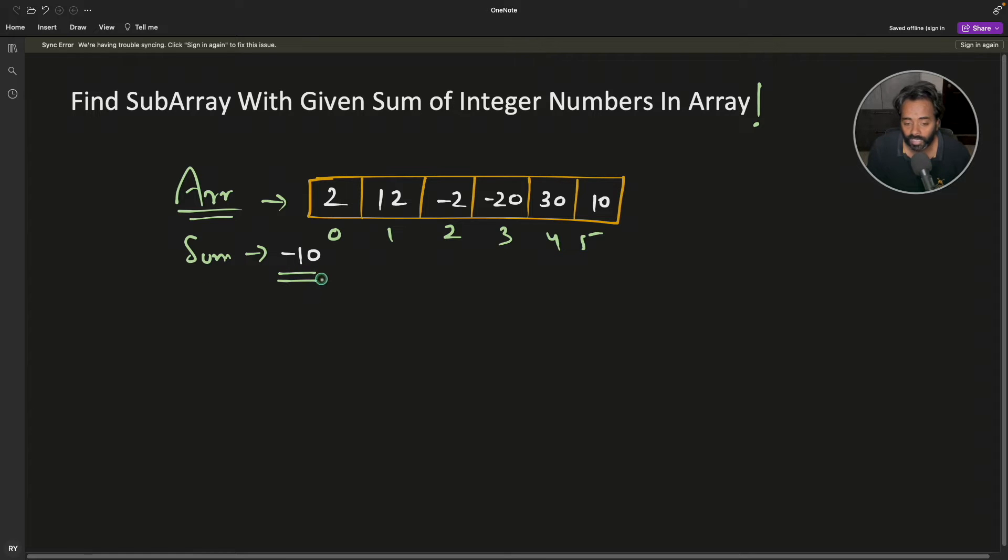So sum is -10, so the answer is this guy from here to here. You have to return 1 and 3. This is the problem because if you add these numbers, the sum is -10.